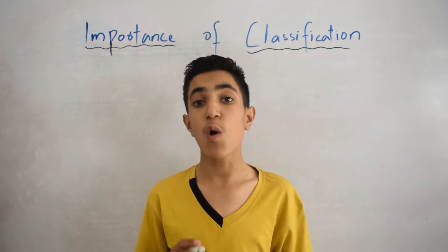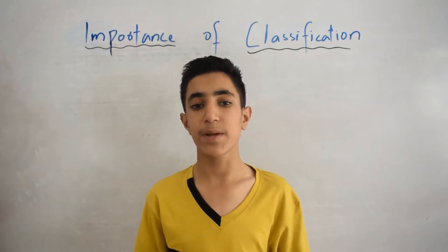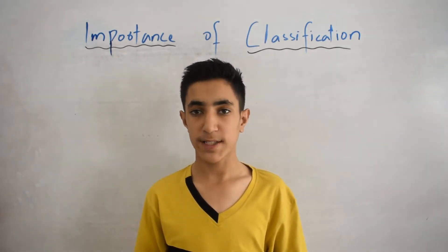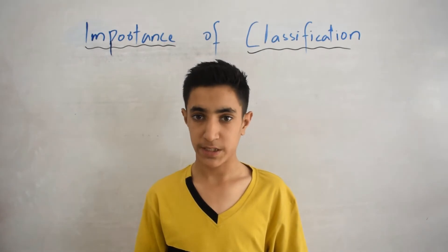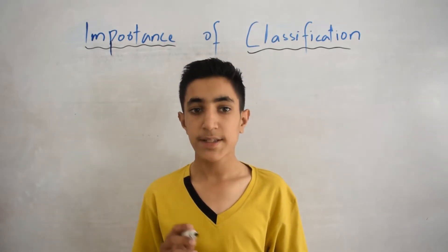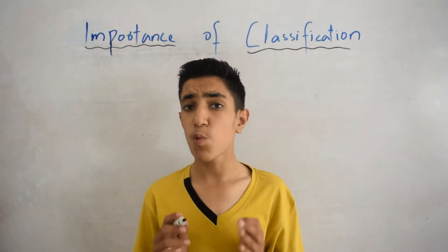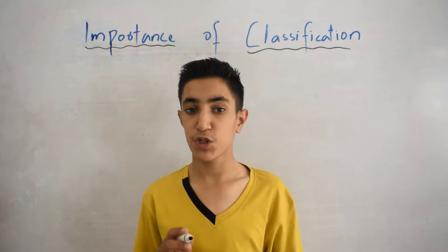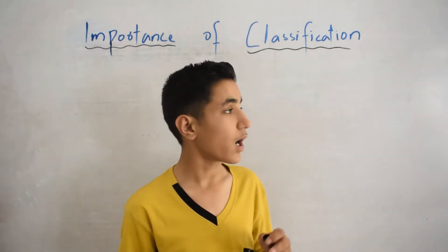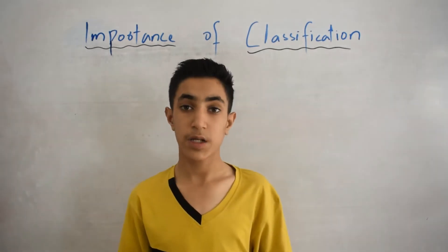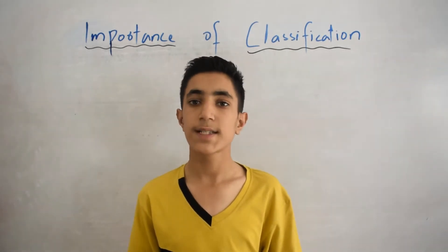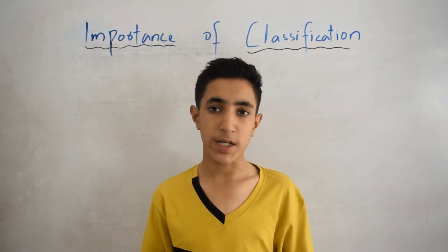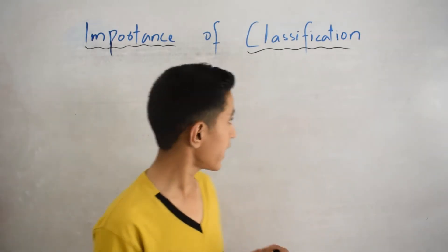Today, about 1.6 million different species have been classified, yet this may be only one-tenth part of the total species present on the earth. Now let's come to our main topic, which is the importance of classification.